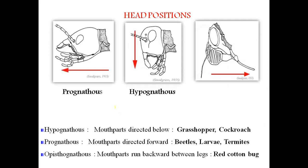The insect head has three positions: prognathus, hypognathus, and opistognathus. Hypognathus means the long axis of the head is vertical, at a right angle to the long axis of the body, and the mouth parts are directed downwards. 'Hypo' means below, 'gnatha' means mouth. Examples include grasshoppers and cockroaches.